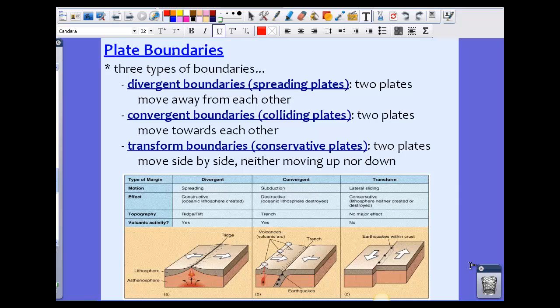The three types of boundaries we have are divergent boundaries, also called spreading plates. You're going to see this a lot in your textbook. At divergent boundaries, two plates are moving away from each other. They're diverging. We have convergent boundaries, also called colliding plates in your textbook, where two plates move towards each other.